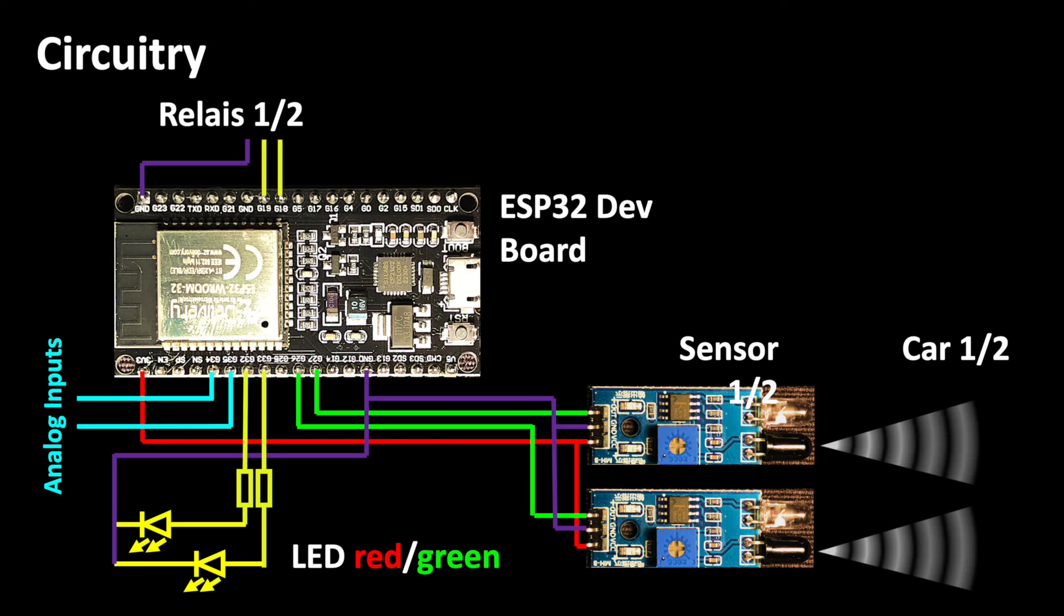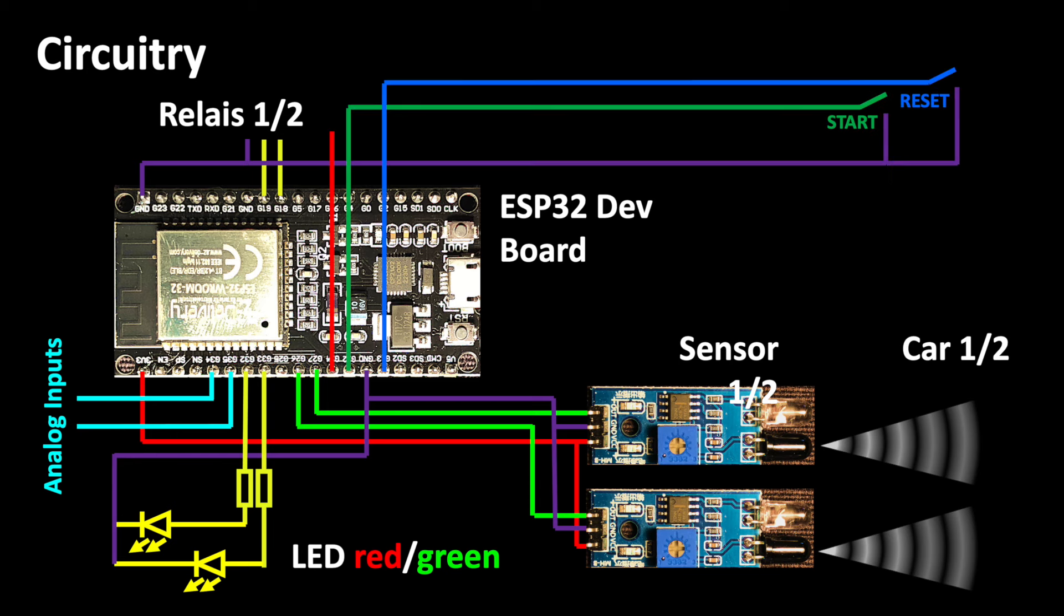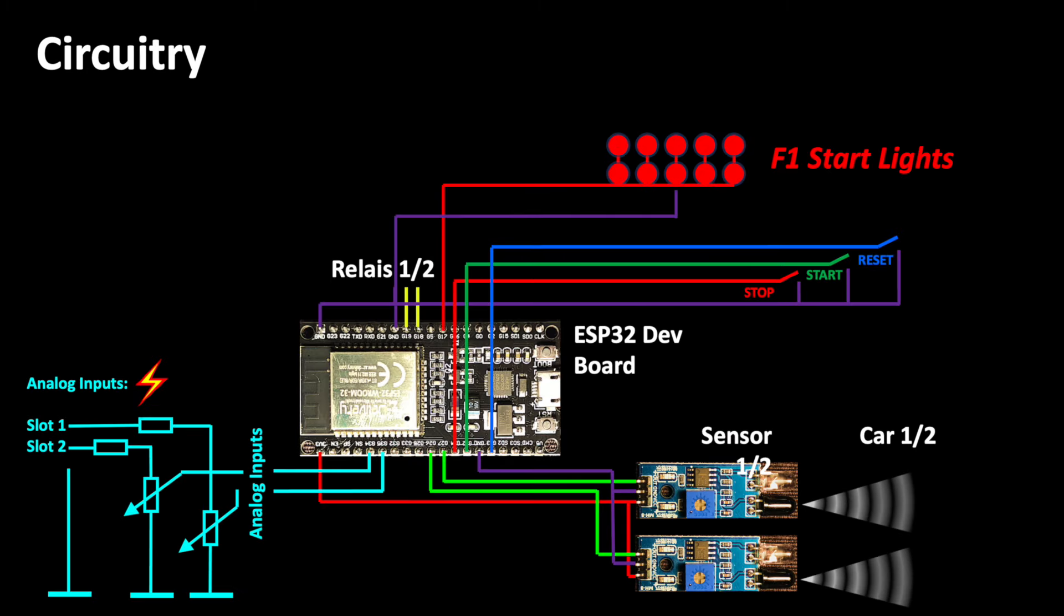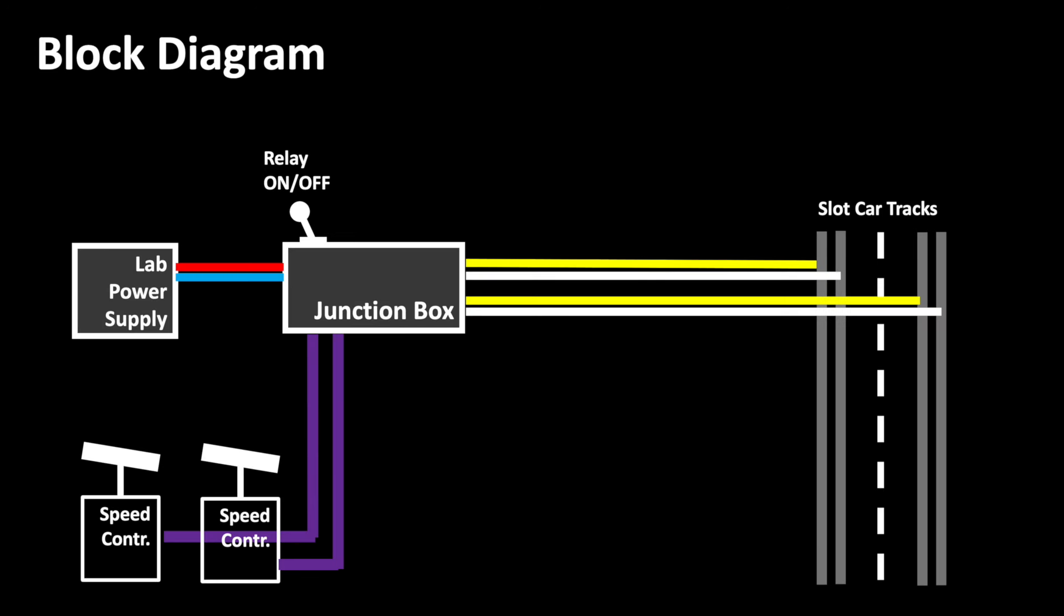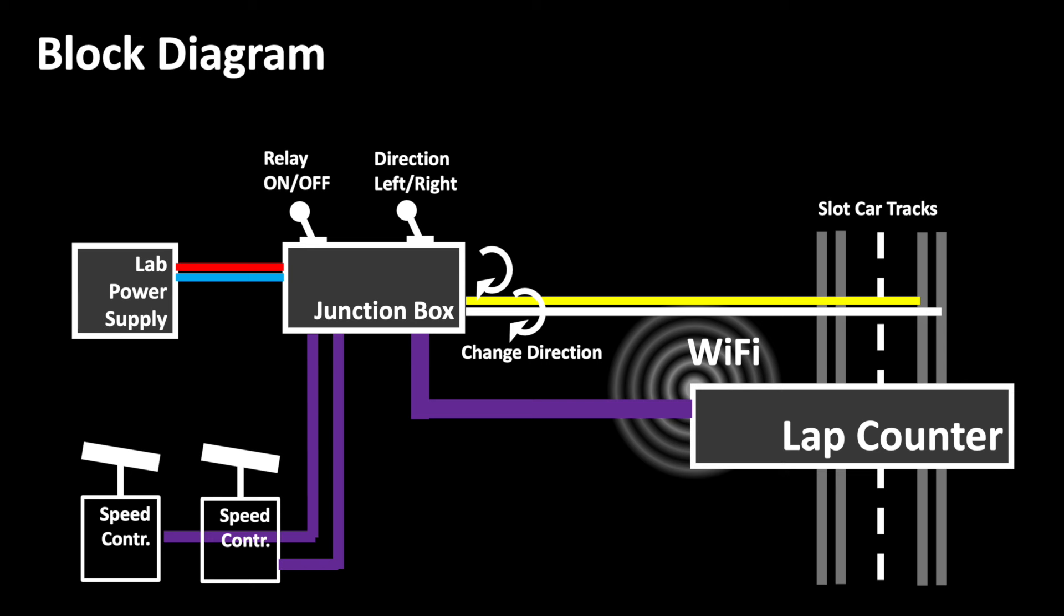You could operate the lap counter without any electrical connection to the racetrack. You could leave out the buttons and relays and only operate the lap counter via the browser interface. This works fine. However let me tell you it's a lot more fun if you integrate the lap counter with all the functions. In this context I'm having a suggestion on how you can easily change the race direction.